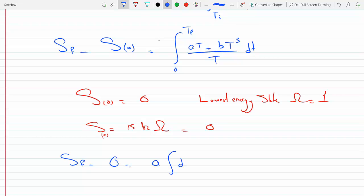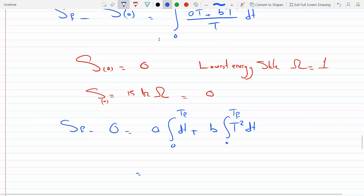Taking this to be zero at zero, we can continue on the problem and we could say this equals zero, and we could integrate this to a dT plus b T squared dT.